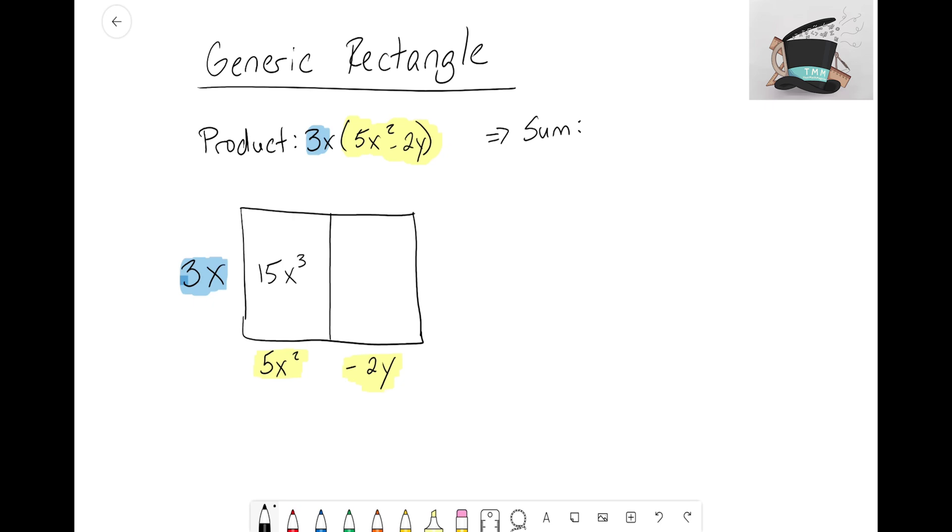That's why we use generic rectangles. For this last space, I have 3x times -2y. The constants 3 and -2 make -6, and x times y gives us xy.